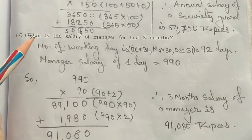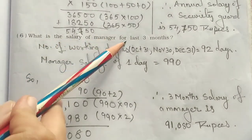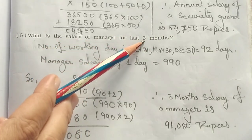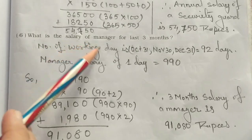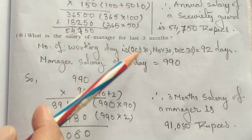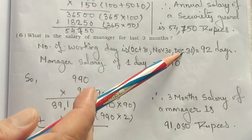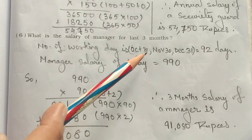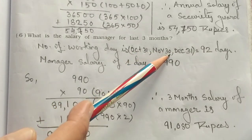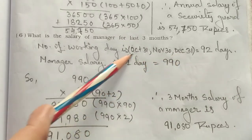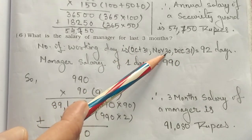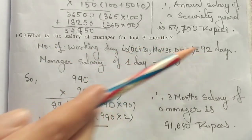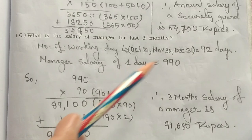Question 6: What is the salary of the manager for the last 3 months of the year? The last 3 months are October, November, and December. October has 31 days, November has 30 days, and December has 31 days. Adding: 31 + 30 + 31 = 92 days.